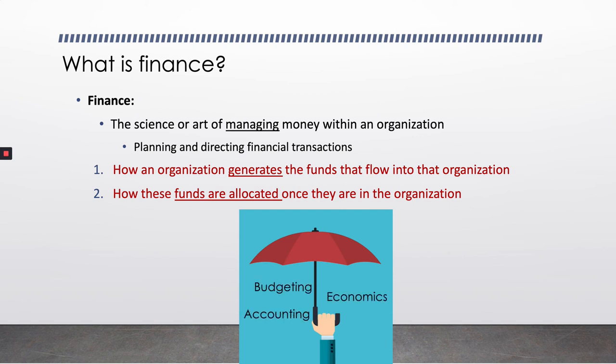Ultimately what we're talking about is the managing of money in an organization, and typically that involves two main concepts: one, how the organization generates the funds that go into it, and two, how those funds are then used or allocated once they're in the organization. I think it's important for us to have this broad landscape so that as we move forward and identify specific concepts — whether it's revenues and expenses today or budgeting later in the semester — we know this is our baseline starting point. Organizations are ultimately trying to make sound financial decisions.